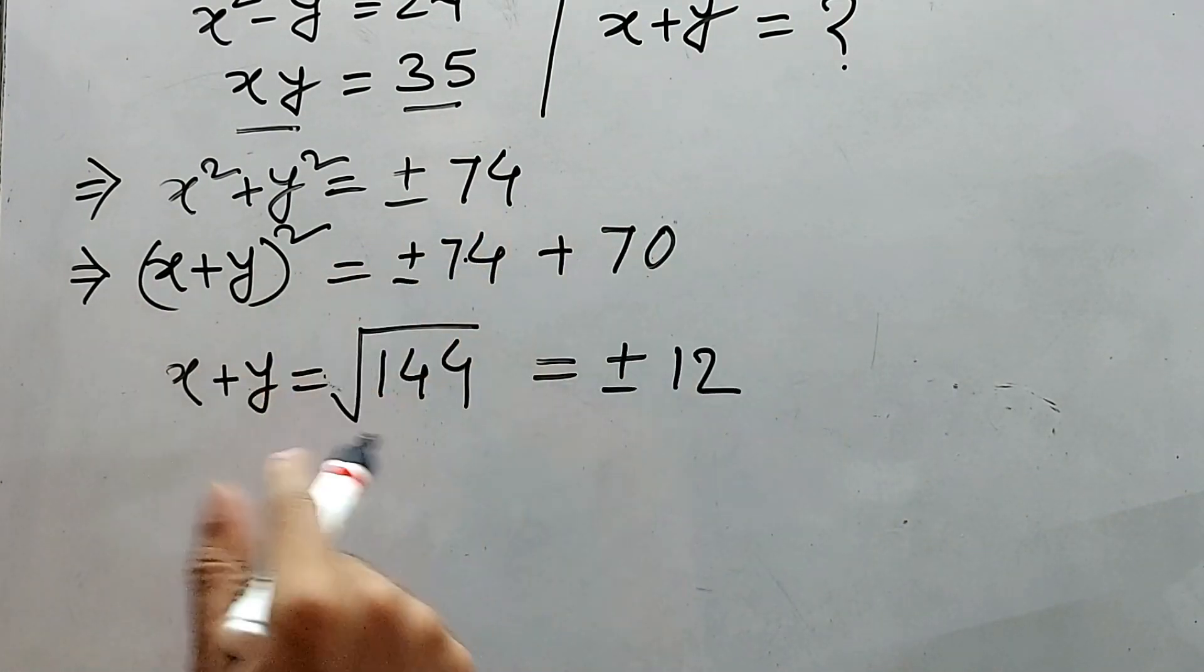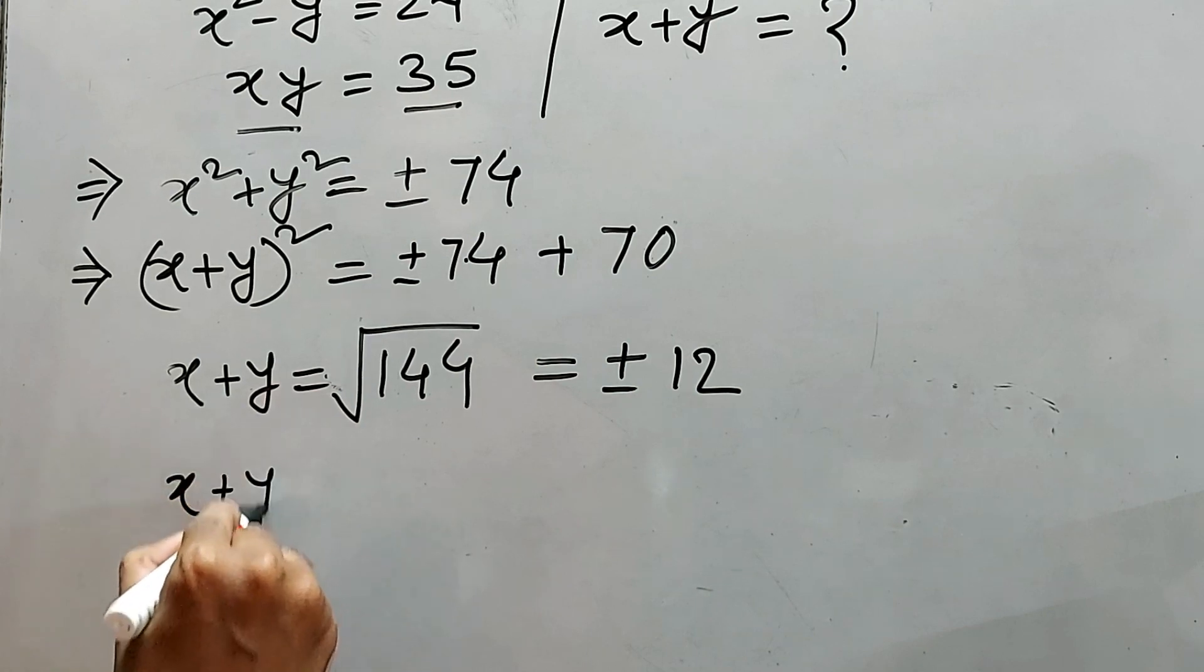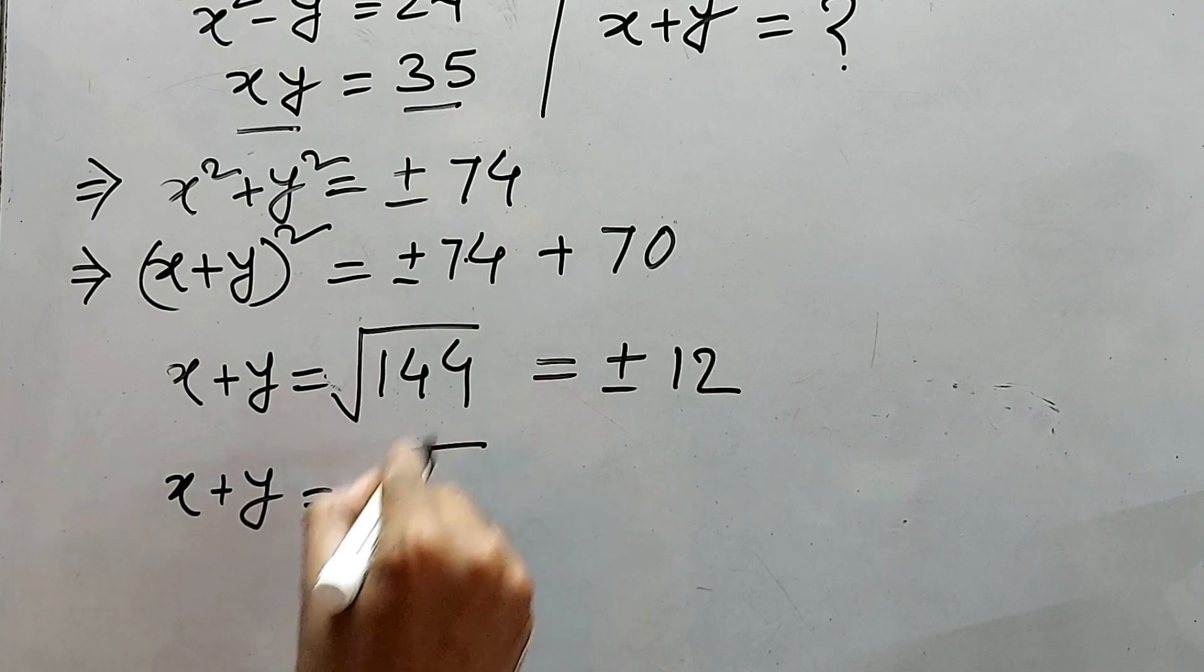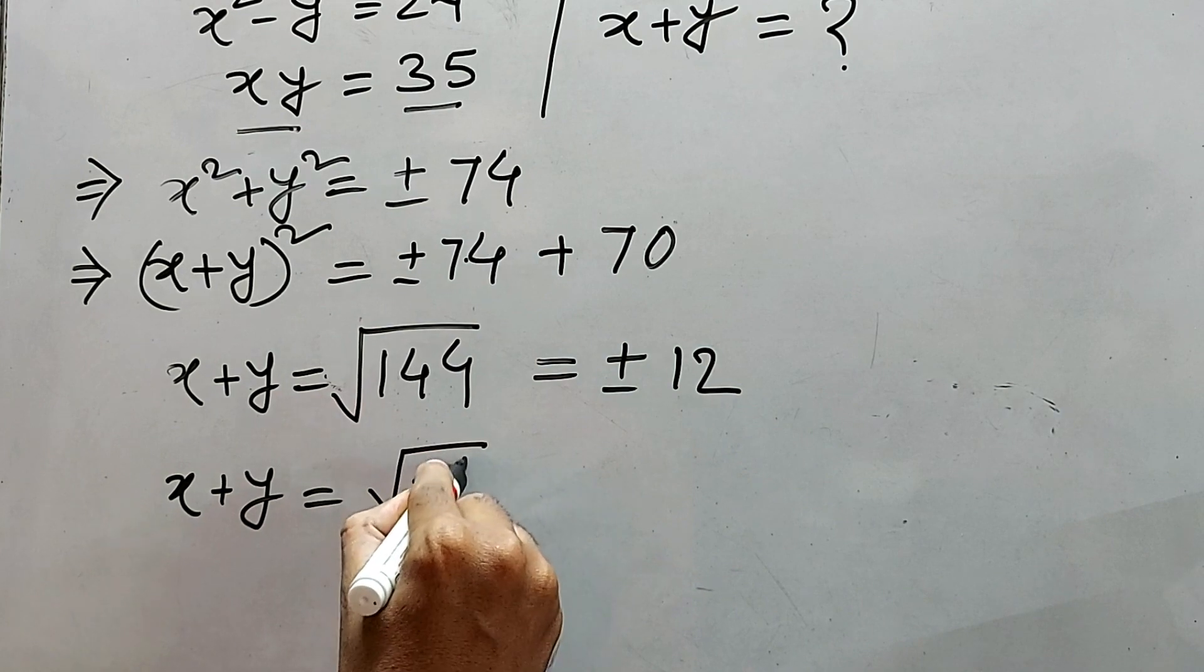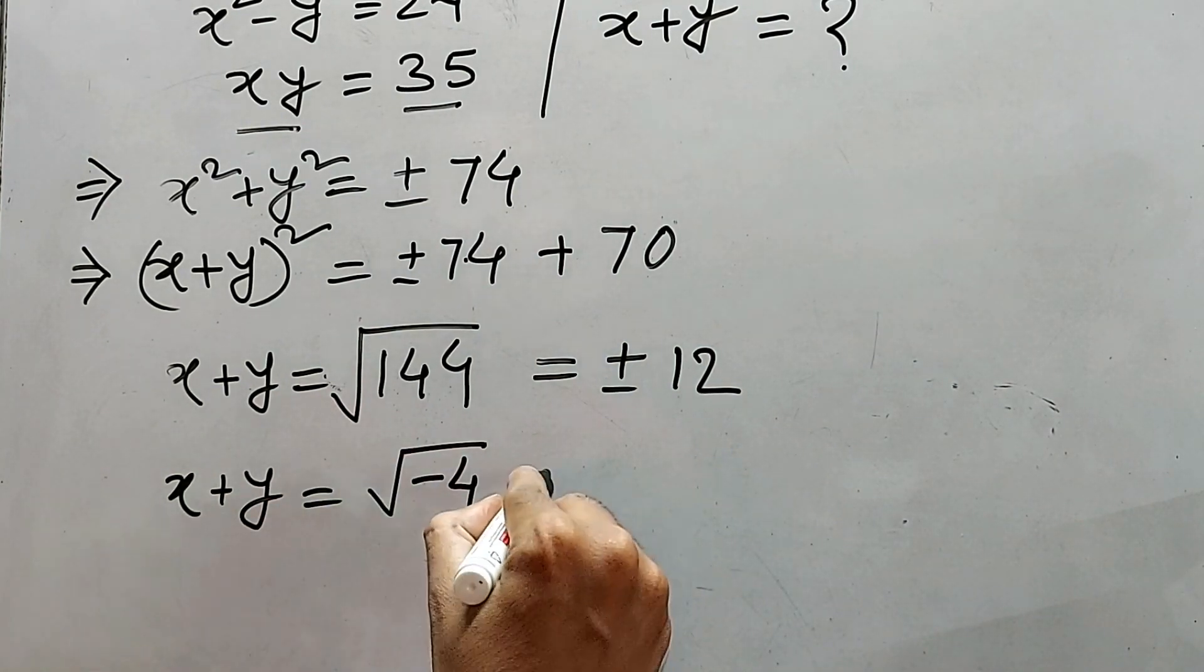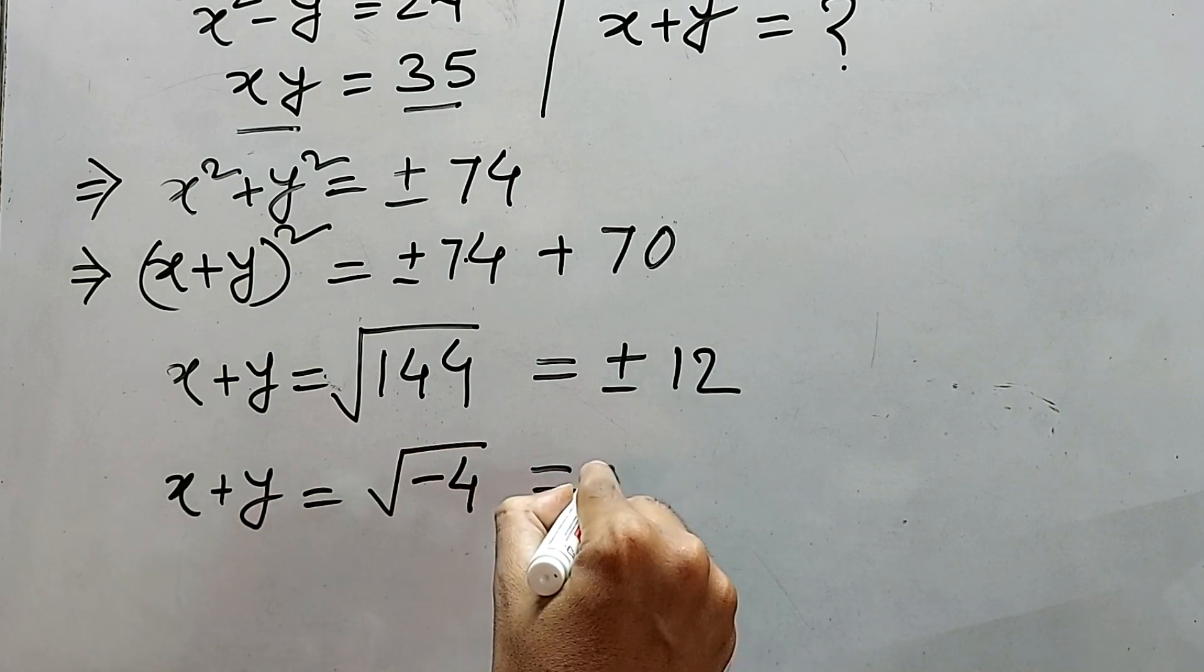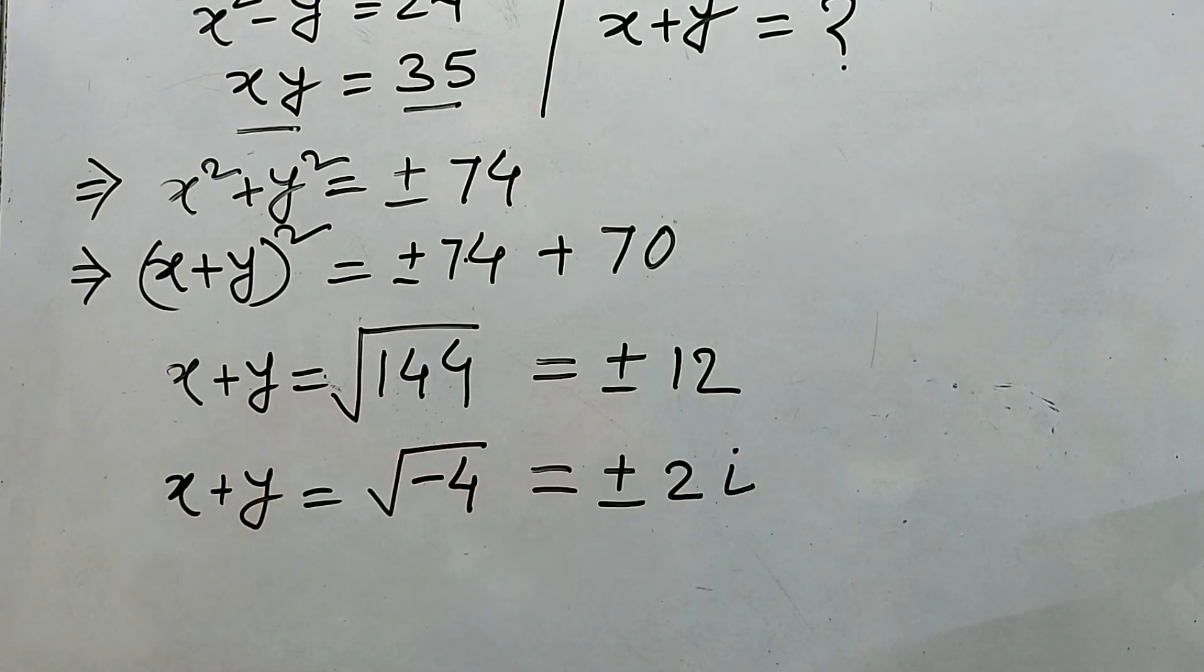And taking the next negative value. X plus y is equal to square root of minus 4. Right? Because 70 minus 74. It will be minus 4. What will be the value of minus 4? We know minus 1. Square root of minus 1 is i. And square root of 4 is plus minus 2. That is plus minus 2i. Is it fine?